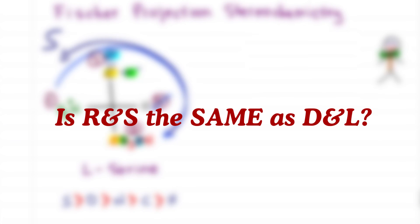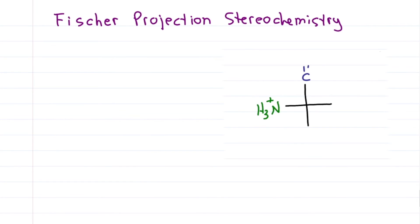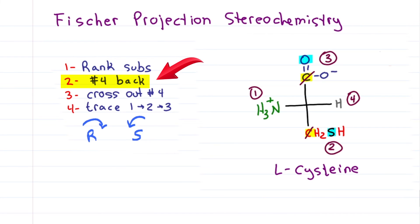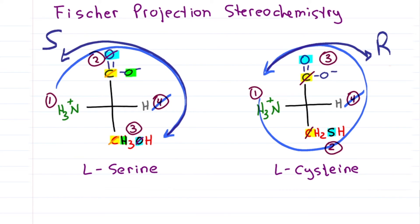Is R and S the same thing as D and L? Let's see. How about L-cysteine? Let's rank the substituents where hydrogen is four and amine is one. Once again, we have two carbon atoms, cross them out, look at the next highest priority where sulfur outranks oxygen, making the R group two and the carboxy three. Number four is not in the back, cross out number four, trace an arc from one to two to three, and reverse the direction because number four was forward. L-cysteine is R. Look at that, two L-amino acids, one is S, one is R. So how can we tell? Hold that thought.